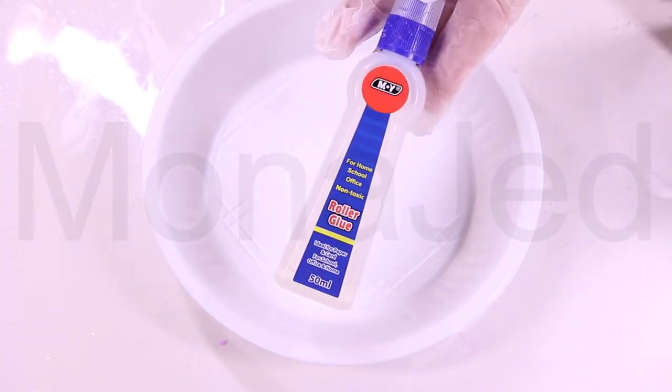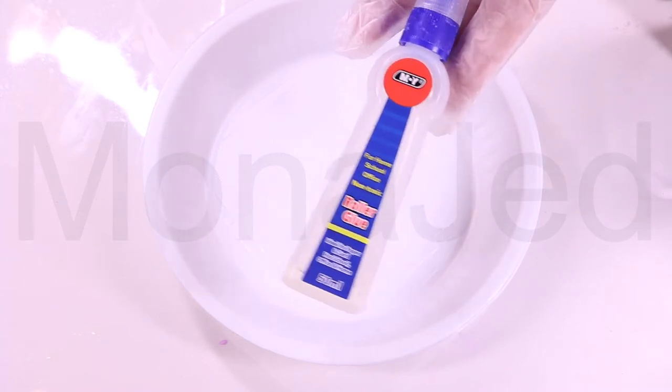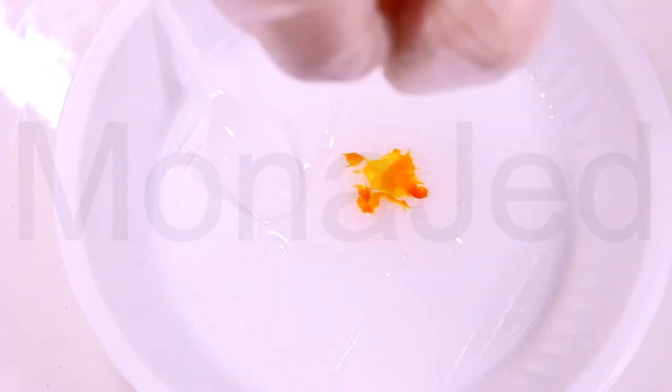Choose any good quality non-toxic clear glue. Wear gloves. Now I'm going to be using highlighter ink. I will use an orange highlighter. Simply pull off the bottom of a highlighter and remove the ink filament. Squeeze the ink filament to empty it off its glow juice into the clear glue.